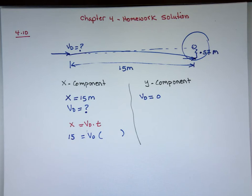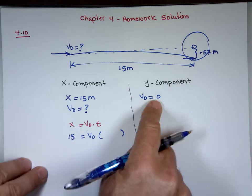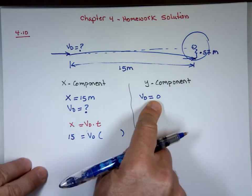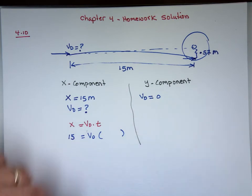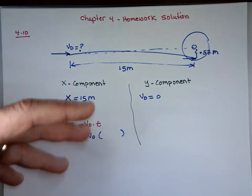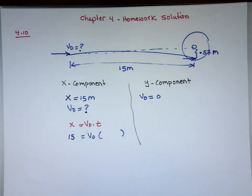Because it was fired horizontally, there is no y-direction initial velocity. You can break it down: v₀ sine of zero — and sine of zero is zero — so it has no initial velocity in the y-direction. It wasn't fired up or down, it was straight out. The acceleration is gravity, using the convention that down is negative and up is positive.